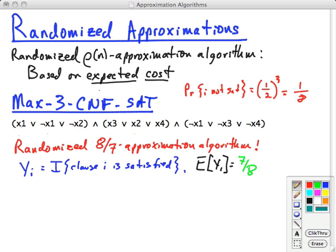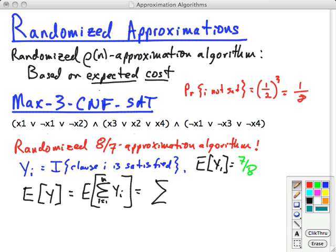You can see where this eight seven is coming from. So the expected value of each item is seven-eighths. Now let's ask for the expected value of the overall Y, which is the expected value of the sum from i=1 to M of all the Y_i clauses. We use linearity of expectation. This should all be really familiar from earlier in the semester. We can move the expectation in. So now it's the sum from i=1 to M of seven-eighths, which is M times seven-eighths.